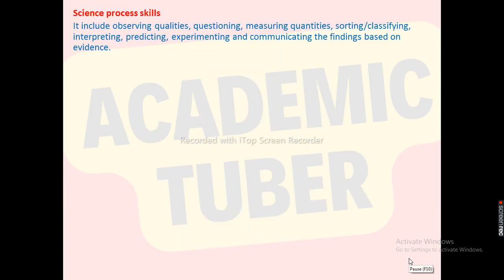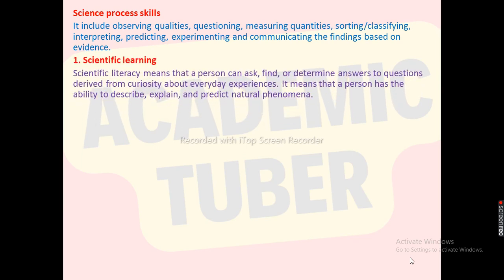Science process skills include observing qualities, questioning, measuring quantities, sorting, classifying, interpreting, predicting, experimenting, and communicating the findings based on evidence.